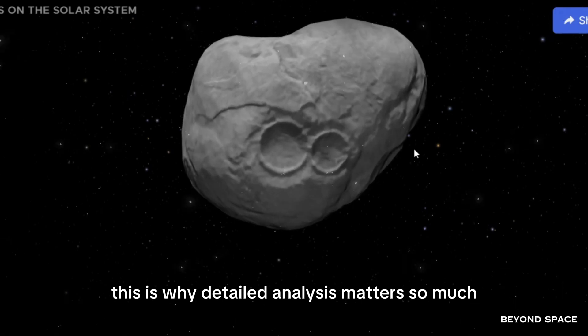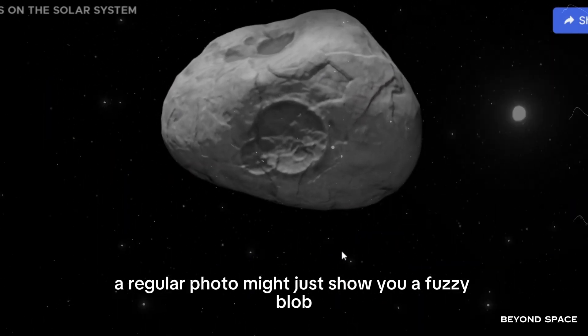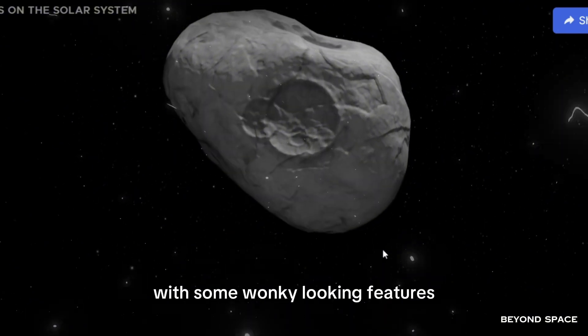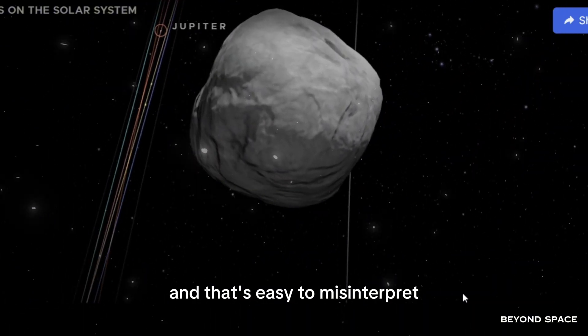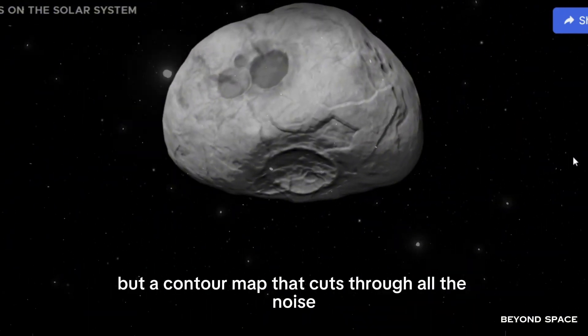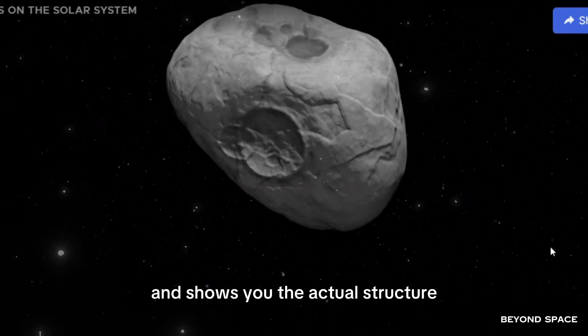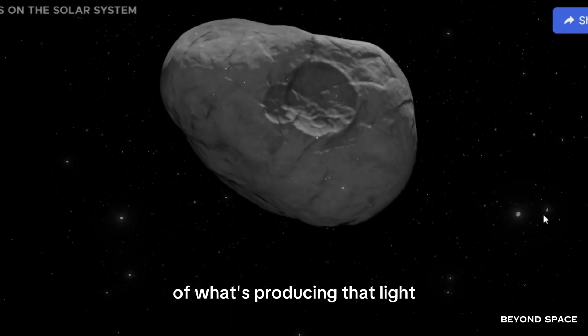This is why detailed analysis matters so much. A regular photo might just show you a fuzzy blob with some wonky-looking features, and that's easy to misinterpret. But a contour map?